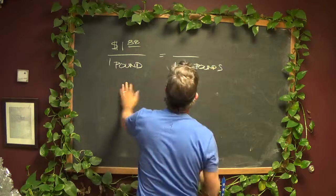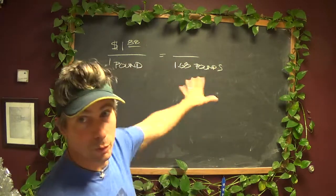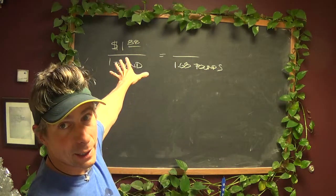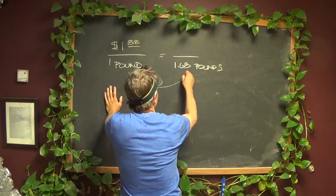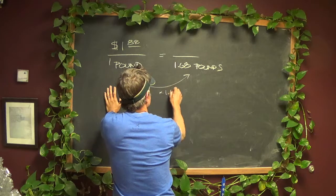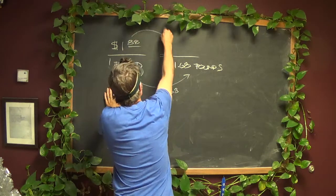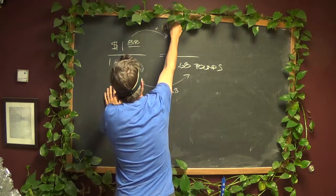So the question is what is it going to cost if it's 1.68 pounds and the unit price is per 1 pound. So just like we did in class, we're going to figure out that to get from here to here, we've got to multiply by 1.68, so the same thing goes up here, times 1.68.